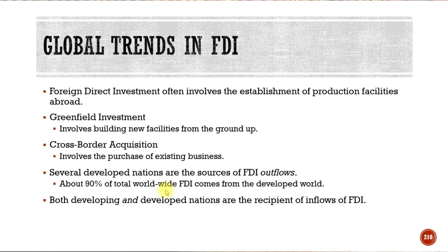Naturally, several developed nations — such as nations within the European Union, Canada, and the United States — have seen a lot of outflows of cash to developing countries, mainly because labor is very cheap and land is typically inexpensive, and we build new factories there that are maybe cleaner than the ones we have here.